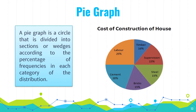A pie graph is a circle divided into sections or wedges according to the percentage of frequencies in each category of the distribution. The whole circle measures 360 degrees, so we divide it into proportions using the formula: degrees = (F / N) × 360, where F is the frequency for each class and N is the sum of all frequencies. For percentage, use F / N × 100. You can construct a pie graph manually using a protractor and compass.